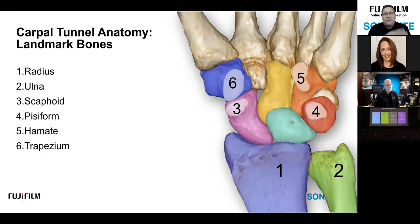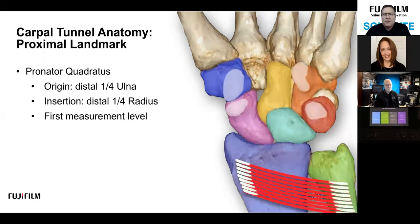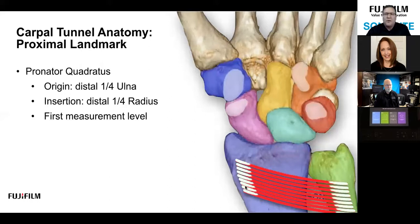In this slide deck we're going to build a carpal tunnel. We'll start with a 3D CT and work layers superficially so we can better understand what the cross-section will look like. As an anatomy survey, we're going to look at the pronator quadratus first — this is a very large muscle and it's the first level where we're concerned with taking a measurement if we suspect some sort of median neuropathy.